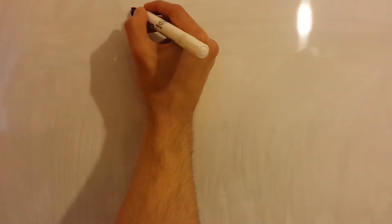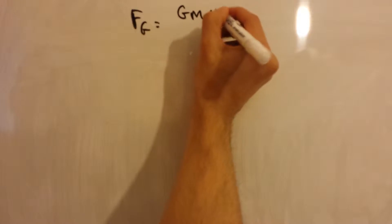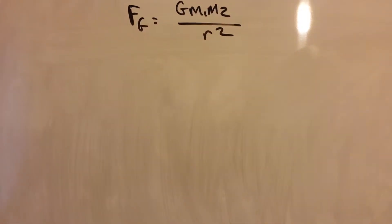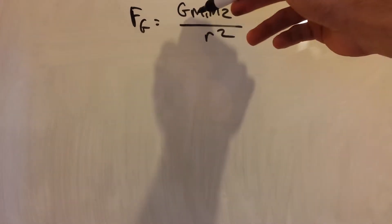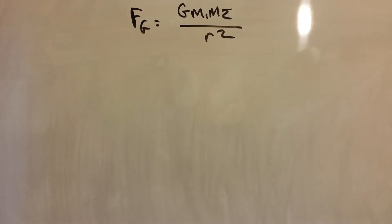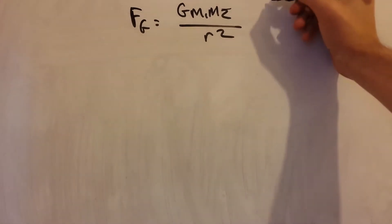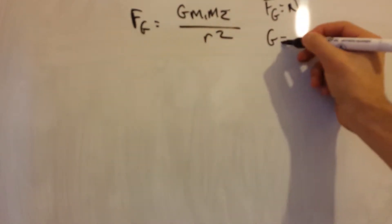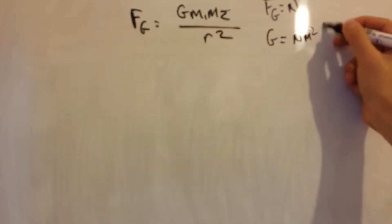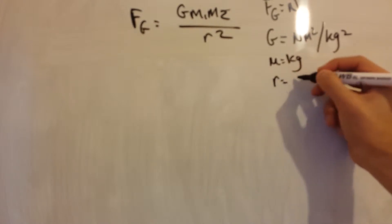Newton's law of gravitation is the following. This equation states that the gravitational force between any two-point objects is always an attractive force, proportional to the mass of each object, and proportional to 1 over r squared, where r is the distance apart. Force is measured in Newtons, the constant of proportionality G is measured in Newton meters squared over kg squared, the mass is measured in kg, and r is measured in meters.